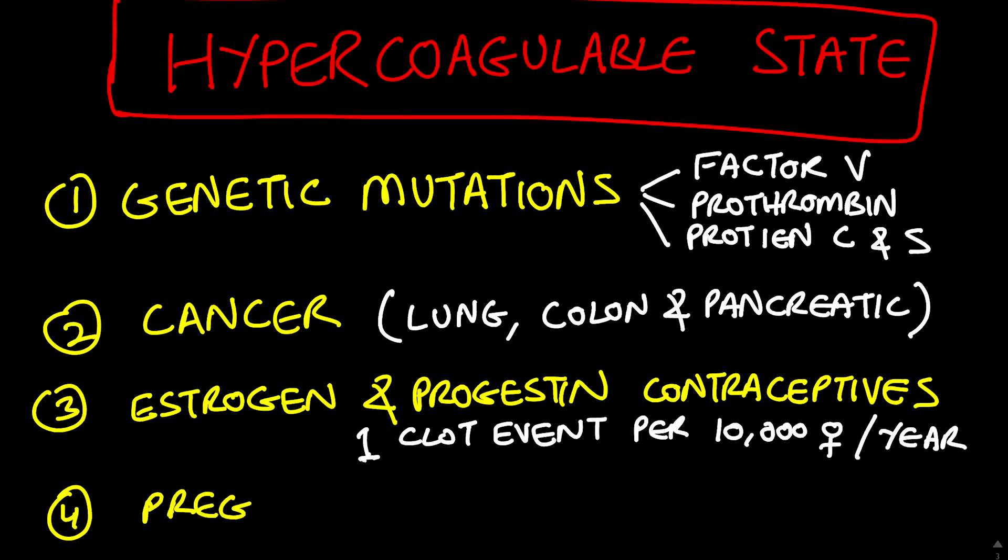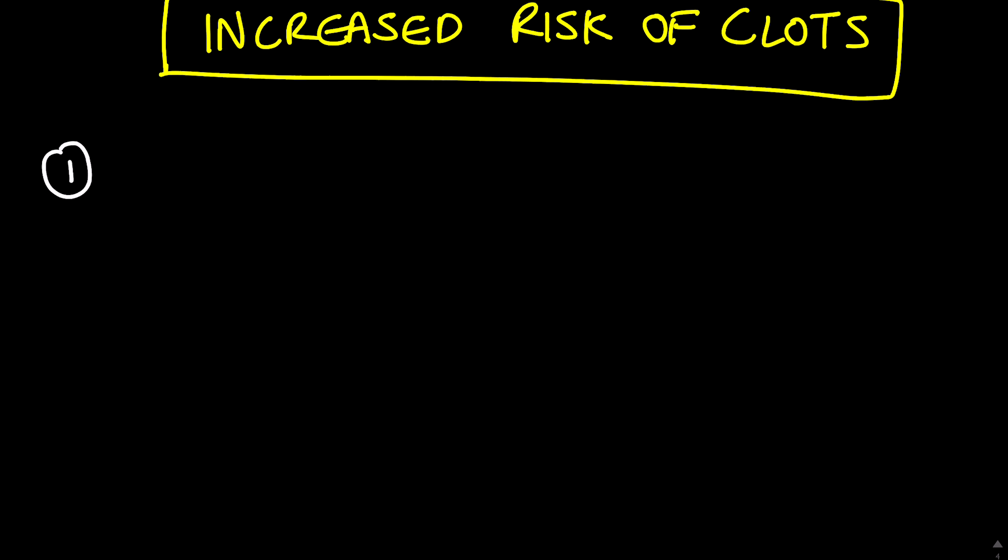But because hormone-containing contraceptives are so widely used, there are still many women who develop clots because of their effect on the cascade. And keep in mind that pregnancy also causes a hypercoagulable state at the rate of about 85 per 100,000 pregnancies. So those are situations where a hypercoagulable state can occur because the chemistry of the cascade doesn't work quite the way it's supposed to.